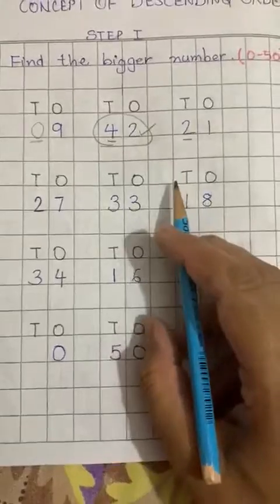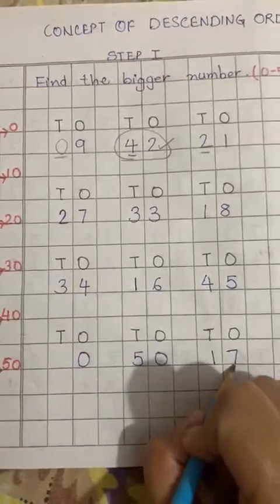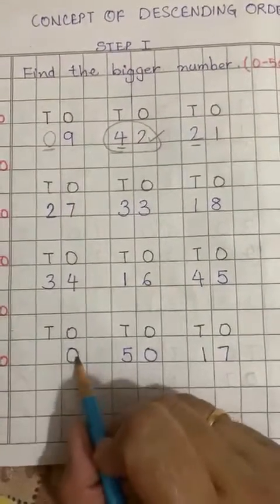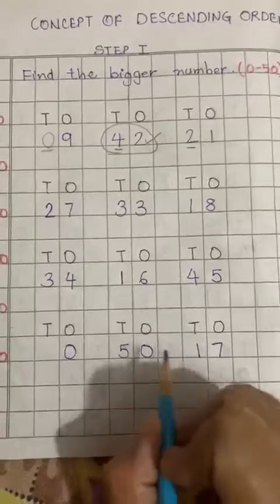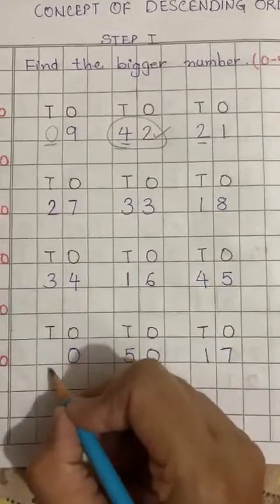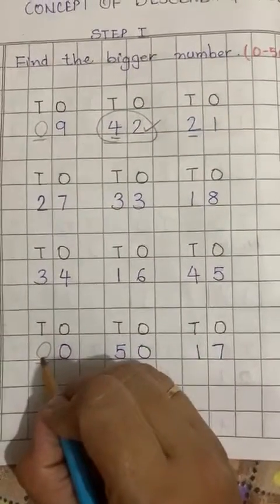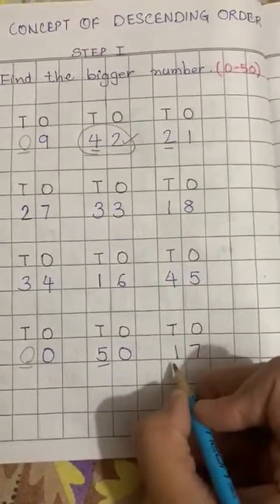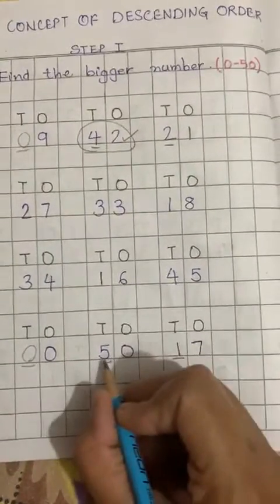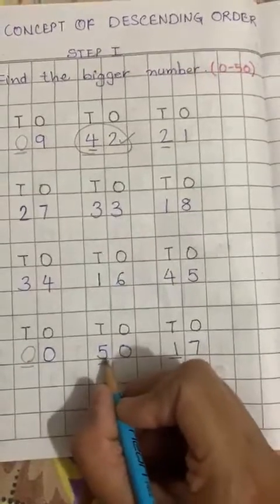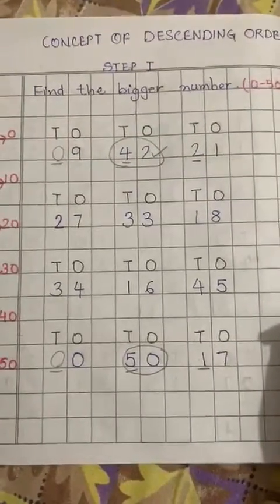Now in the same way, you have to find the bigger number from the given numbers. 0 is the smallest number — sabse chota number 0. Here is 50 and 17. We have to find the 10's place. If there is nothing in the 10's place, that means here is 0. Then 10's place is 5 and here 10's place is 1. The biggest 10's place value is 5, which means 50. So 50 is the bigger number here.